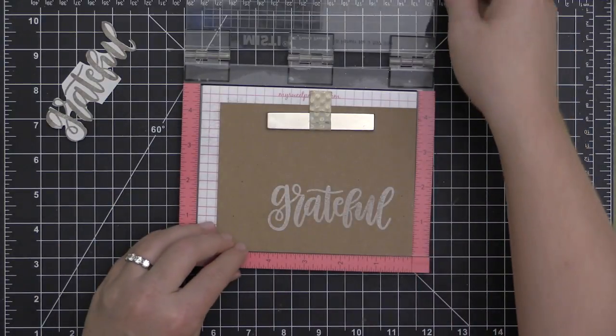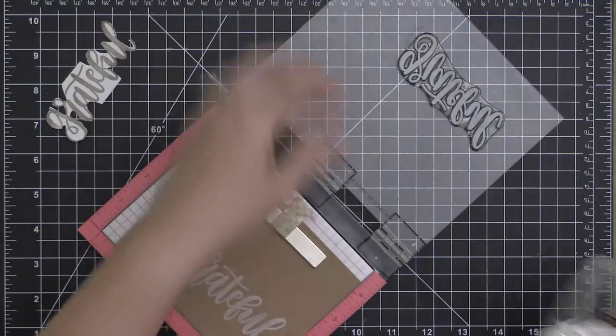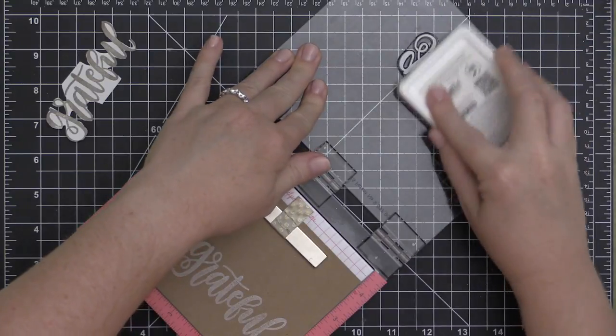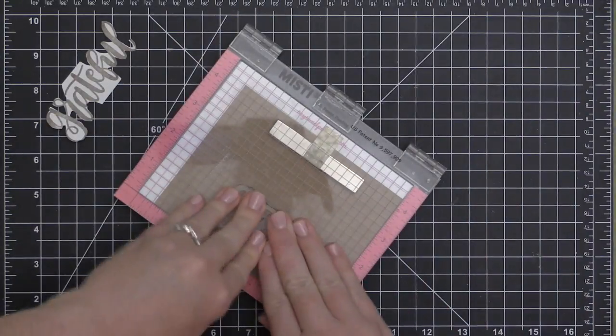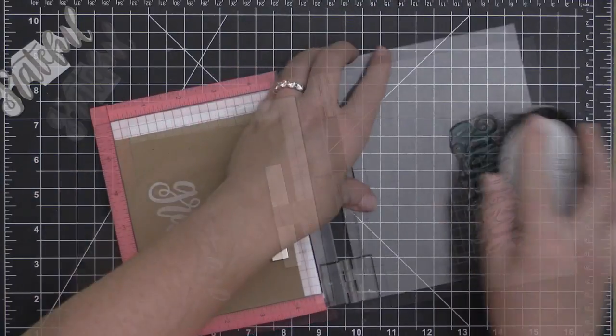I'm going to be stamping in colors on top of this, but I really wanted the colors to come through nice and vibrant. So I'm going to start by stamping each one of these stamps twice in some white pigment ink. You can see I'm inking it up once and stamping it onto my craft cardstock, then inking it up again and stamping it down again.